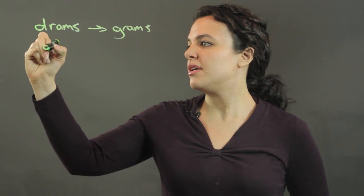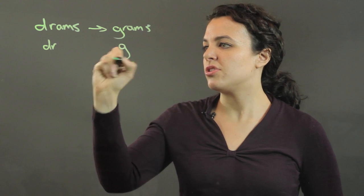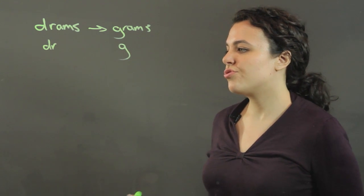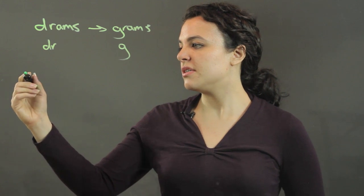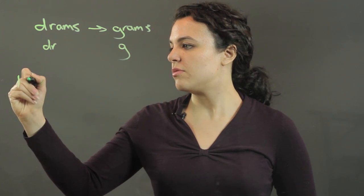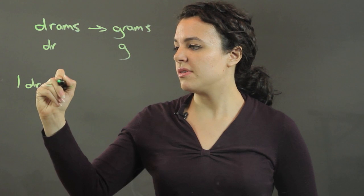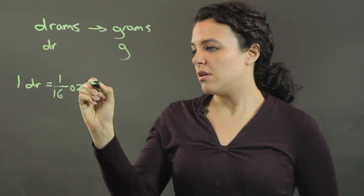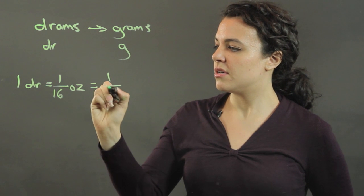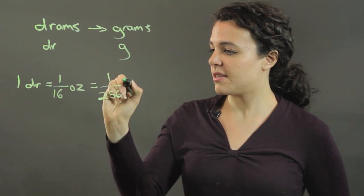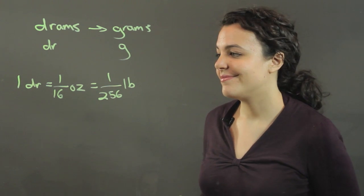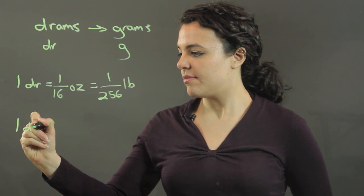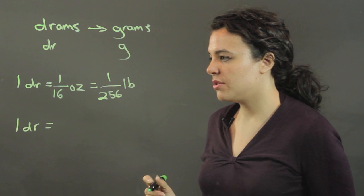Drams are abbreviated 'dr' and grams are just 'g'. Now, one dram is the equivalent of 1/16th of an ounce or 1/256th of a pound, and one dram is also equal to 1.772 grams.